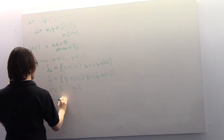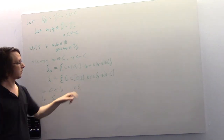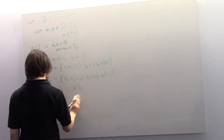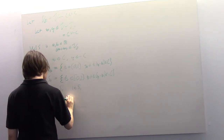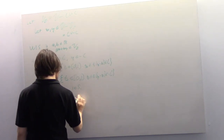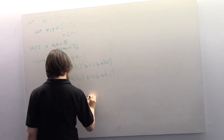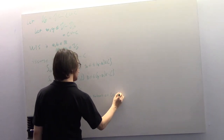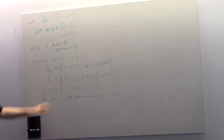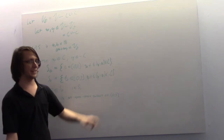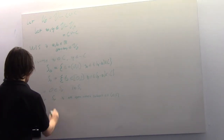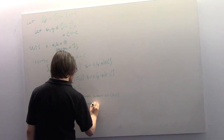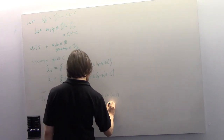We know C has only internal points and is convex. Also Y is not in C, so 1 is not in S-naught. Therefore S-naught is an open convex subset of [0,1]. Similarly, we know 1 is in S1, and minus C is convex and has only internal points, so S1 is also an open convex subset of [0,1].